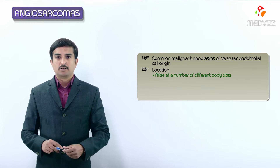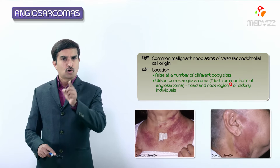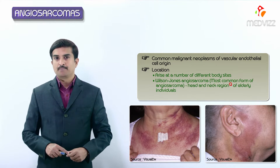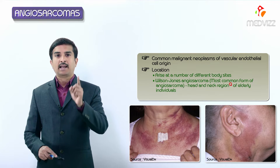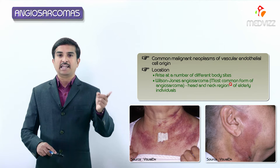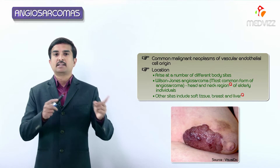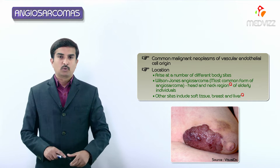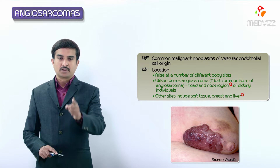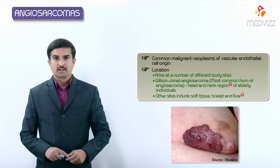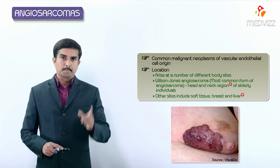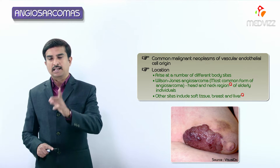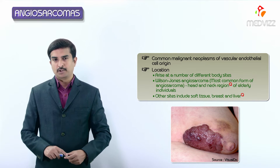Angiosarcomas may arise at a number of different body sites, but the most common form of angiosarcoma, which is the Wilson Jones angiosarcoma, occurs in the head and neck region of elderly individuals. Other sites include soft tissue, breast, and liver. The most common sites are head and neck region - these are important MCQ points.